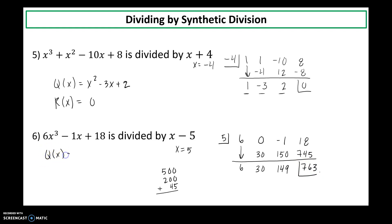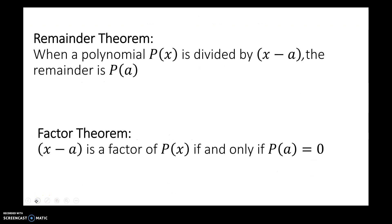Okay, so quotient drops in degree. 6x squared plus 30x plus 149. My remainder is 763. And if you were writing these out, then we would put that back over the divisor. Back over that x minus 5.